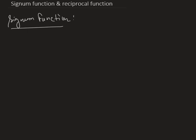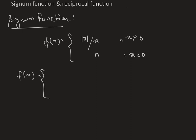The signum function is defined by f(x) equals mod x divided by x when x is not equal to 0, and 0 if x is equal to 0. Or we can write it as 1, 0, minus 1 when x is greater than 0, x is equal to 0, and when x is less than 0.